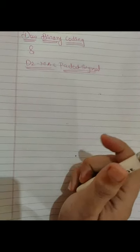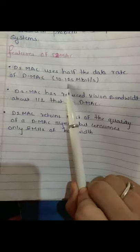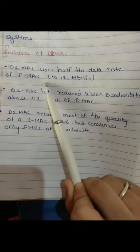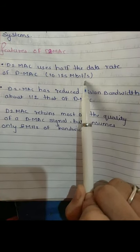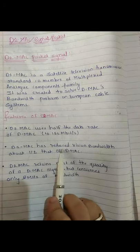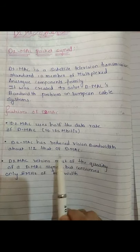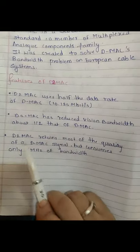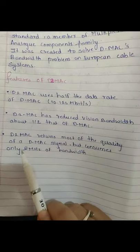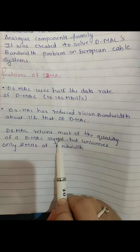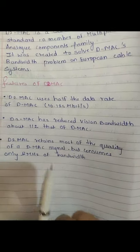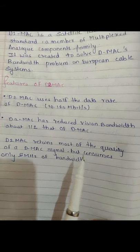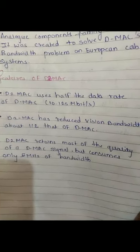These are the features of D2 MAC. D2 MAC uses half the data rate of D-MAC, that is 10.125 megabits per second. D2 MAC has reduced vision bandwidth — about half that of D-MAC. D2 MAC retains most of the quality of the D-MAC signal, but it consumes only 5 megahertz of bandwidth, which is an improvement compared to D-MAC.